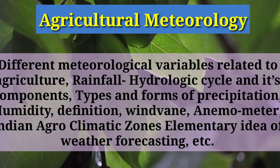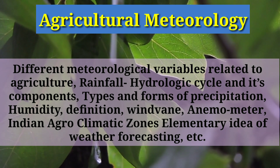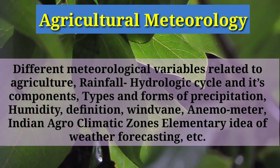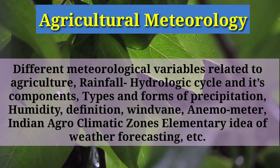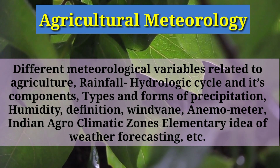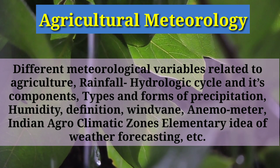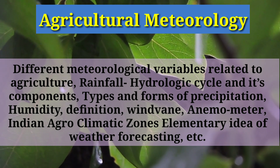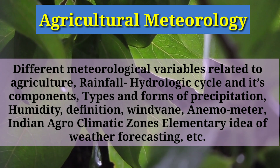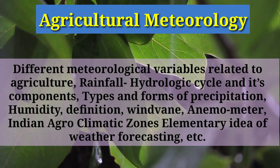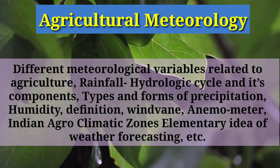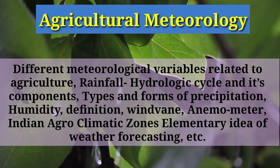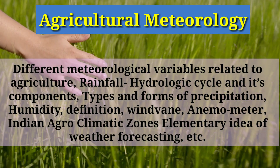Agricultural meteorology covers different meteorological variables related to agriculture: rainfall, hydrologic cycle and its components, types and forms of precipitation, humidity, wind and anemometer, Indian agro-climate zones, and elementary ideas of weather forecasting.